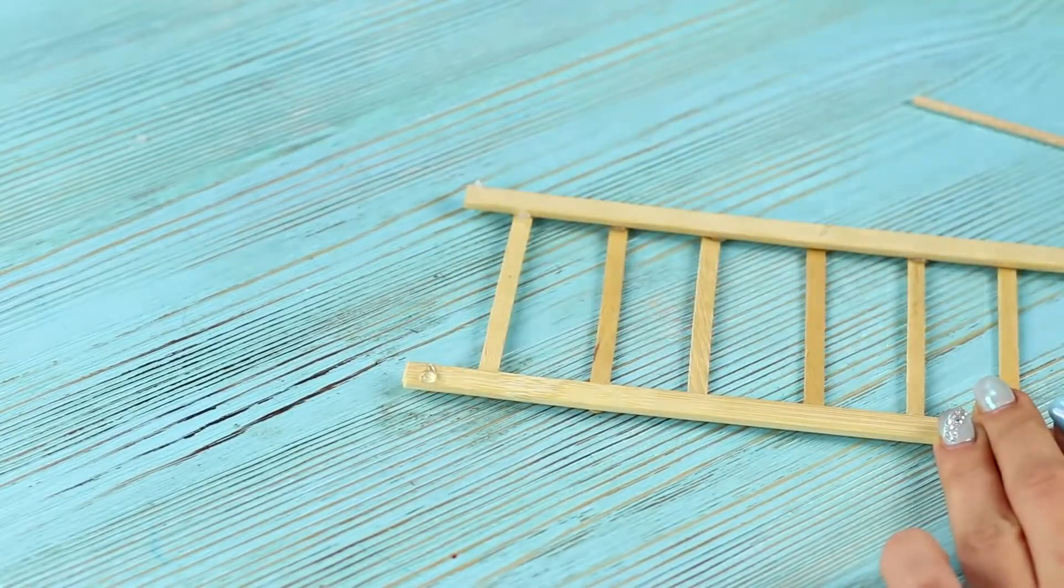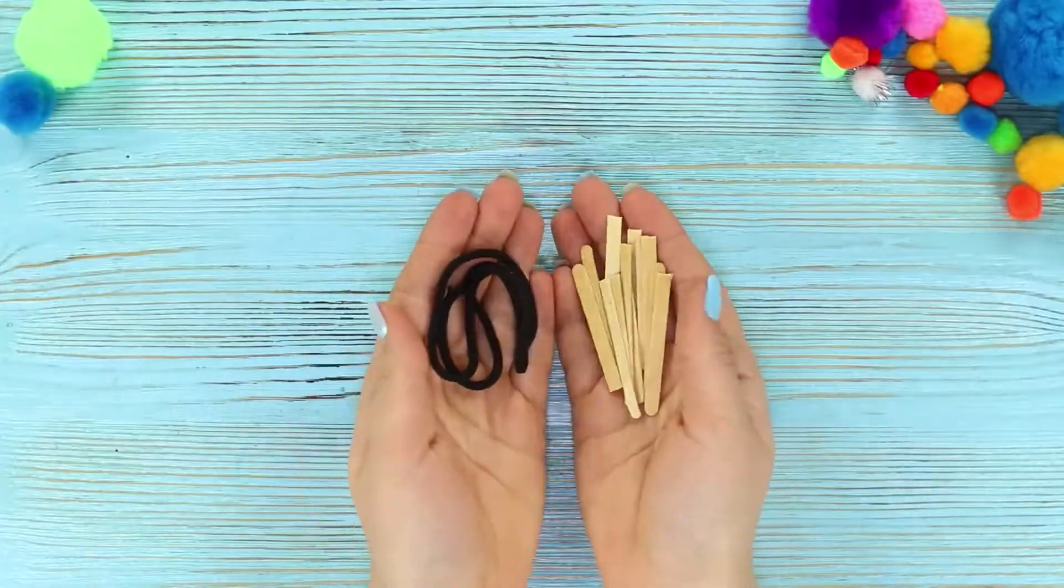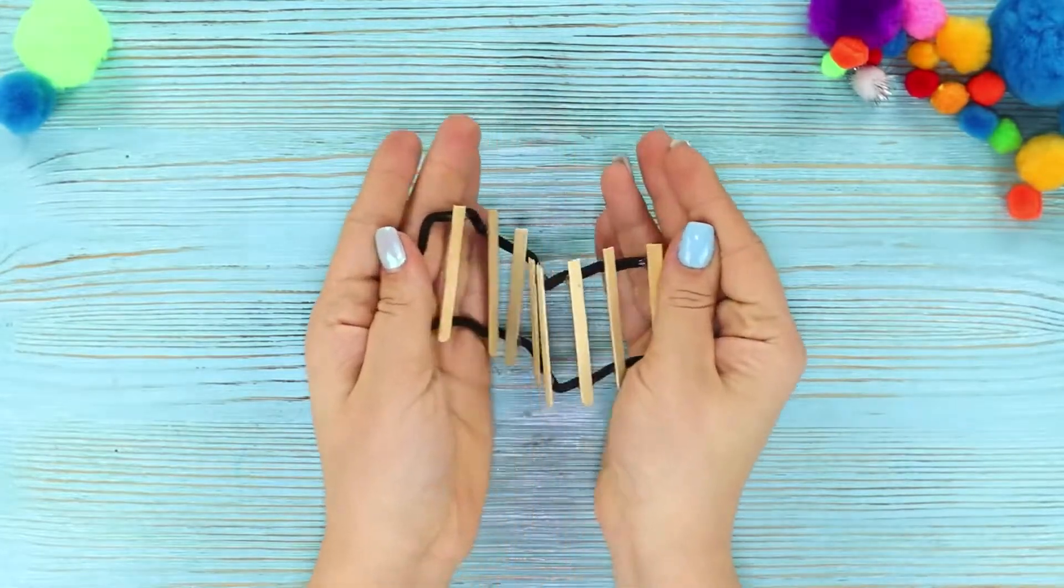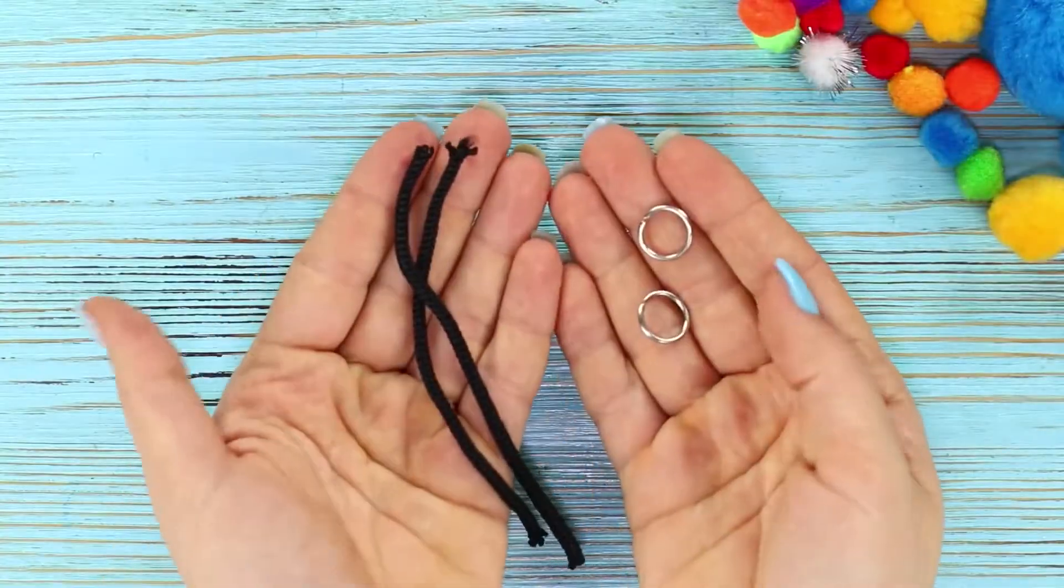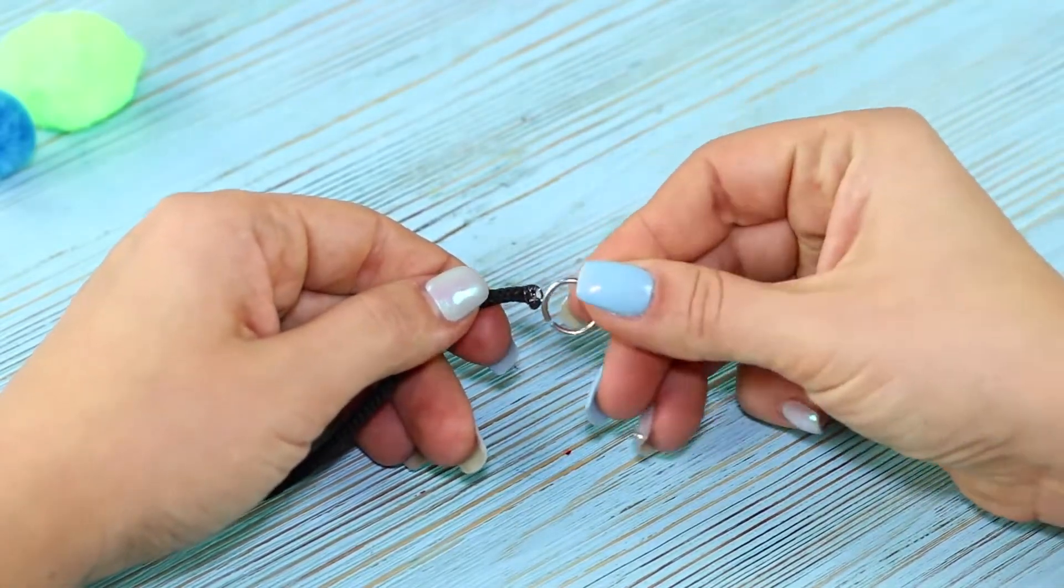Fasten a horizontal bar out of sticks using hot glue. Make a rope ladder from laces and sticks. Take some metal rings and laces and make gymnastic rings. Hot glue the rings to the rope.